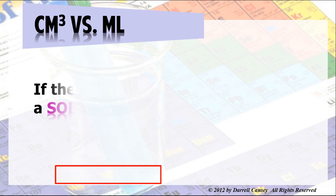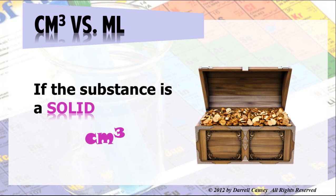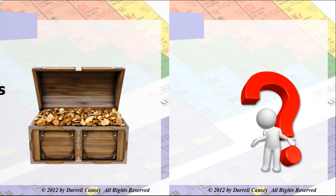And if the substance is a solid, like gold or lead, we tend to use cubic centimeters. And that's just kind of something that scientists and people have agreed upon. If it's a solid, cubic centimeters. If it's a fluid, milliliters. And one milliliter equals one cubic centimeter. It's not that big a deal. It's a nice way to help keep track of things and help people know what we're talking about.